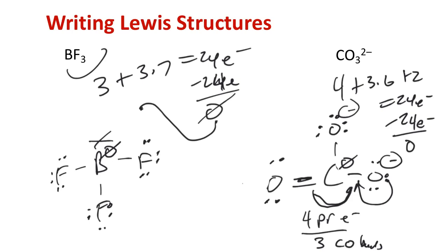The difference between BF3 and carbonate ion is that carbonate has a positive charge on carbon if drawn with three single bonds, so we pull in to make one multiple bond. We don't do that in the case of BF3.